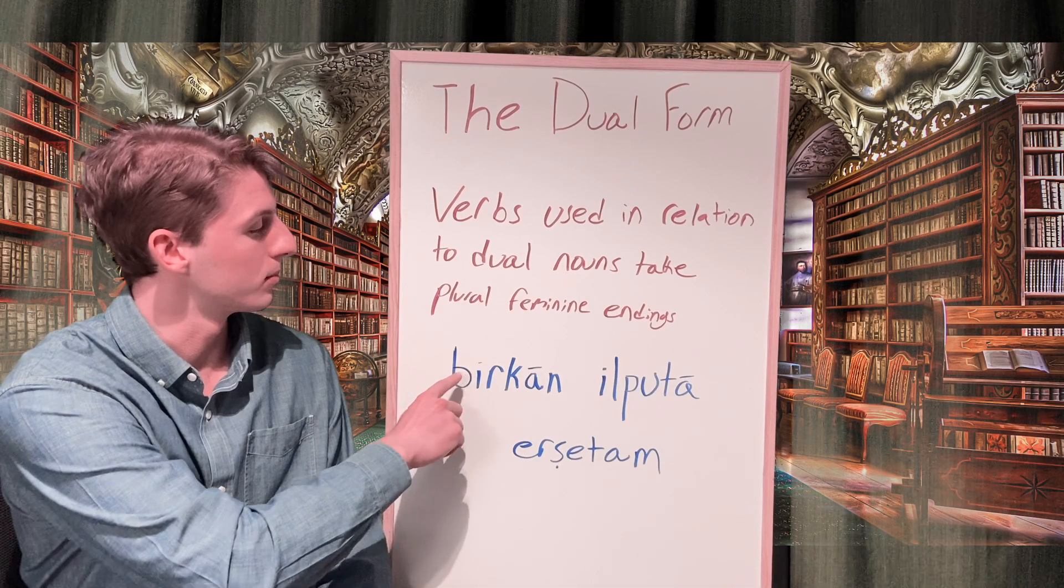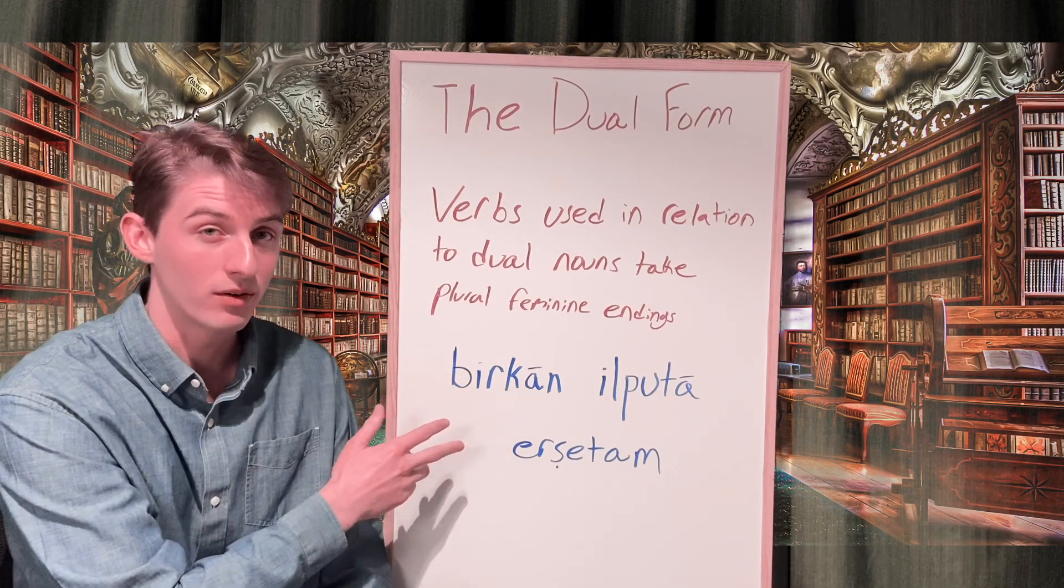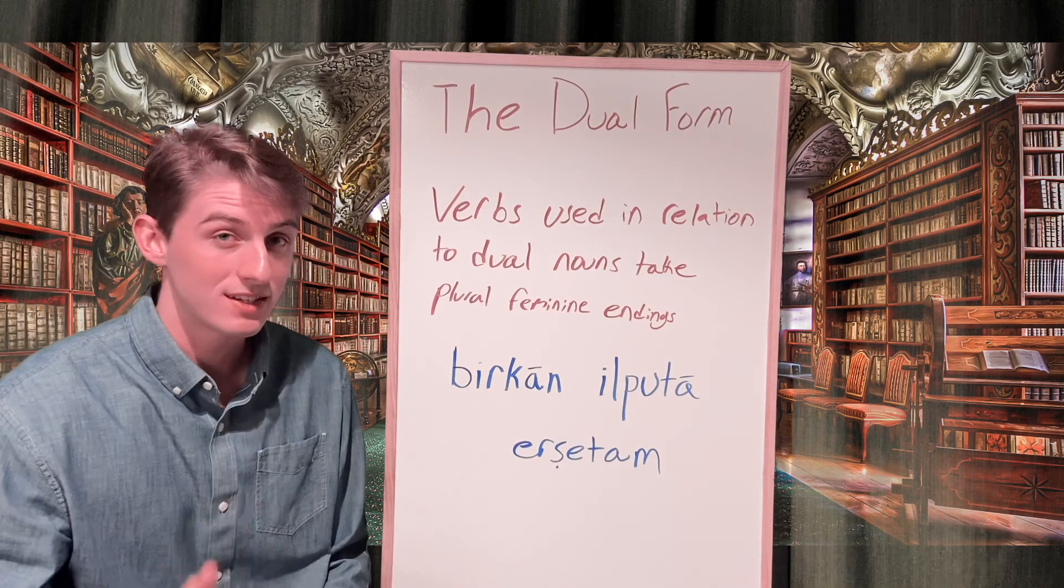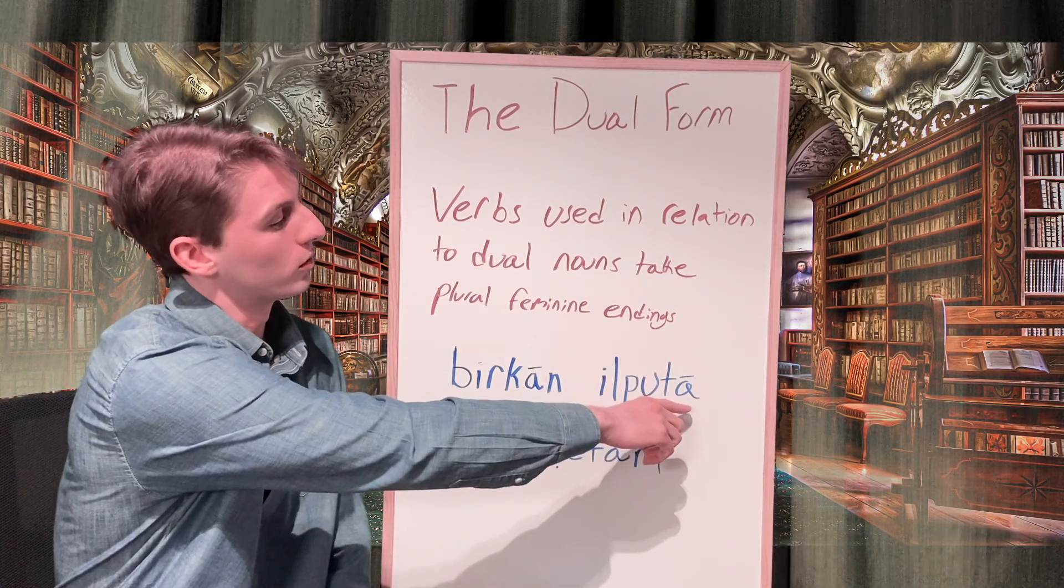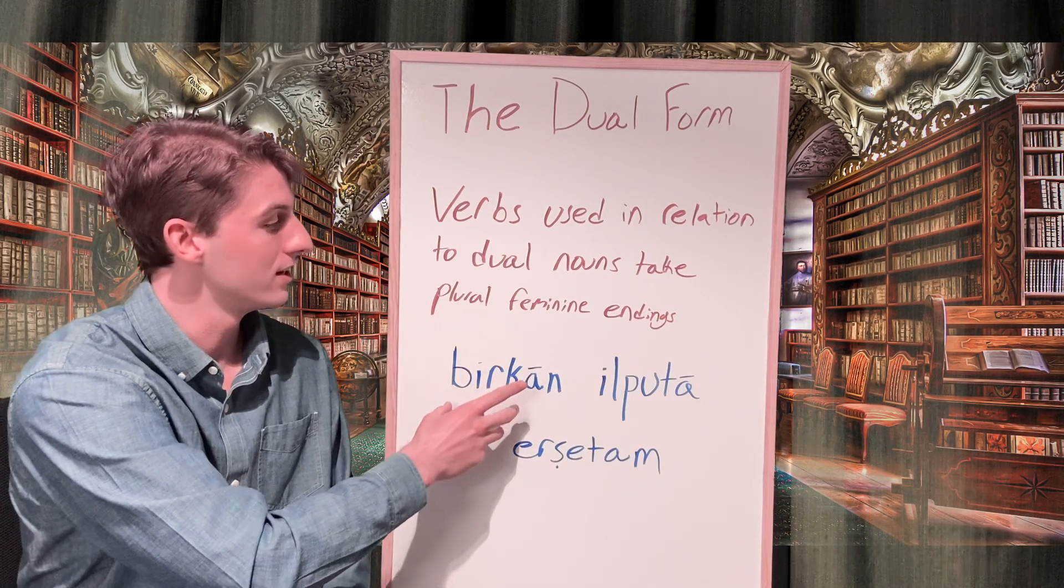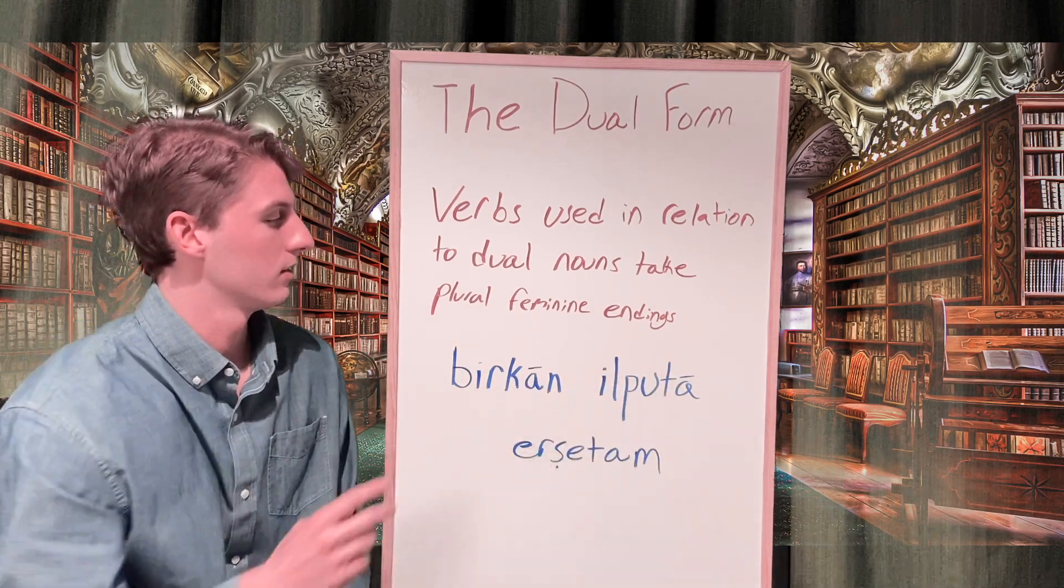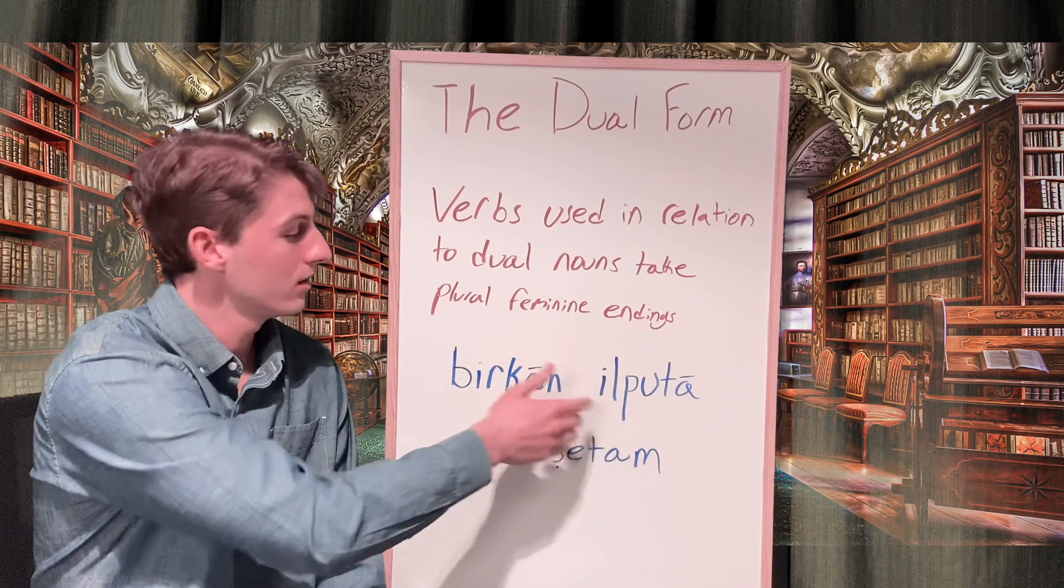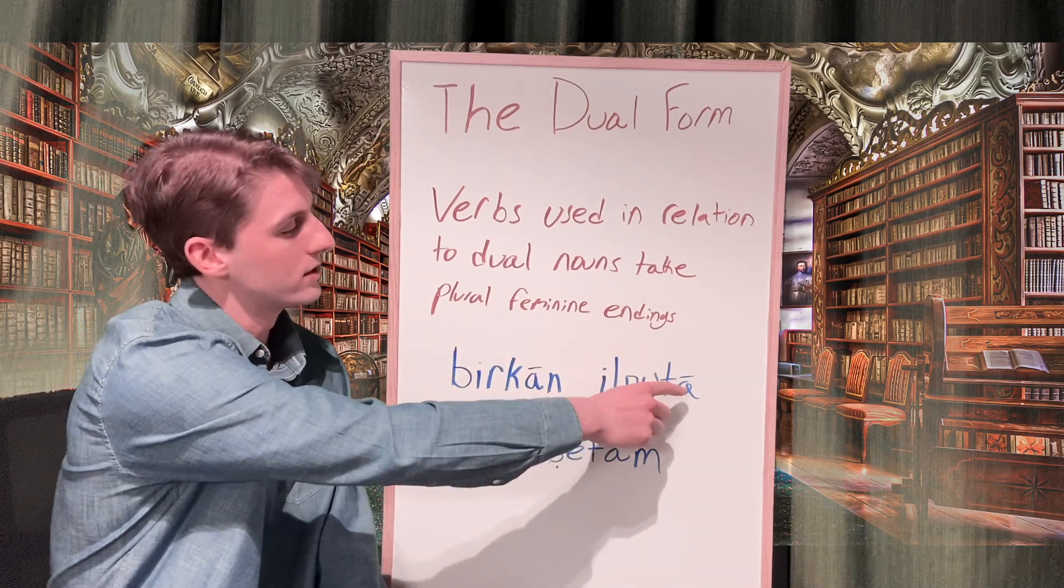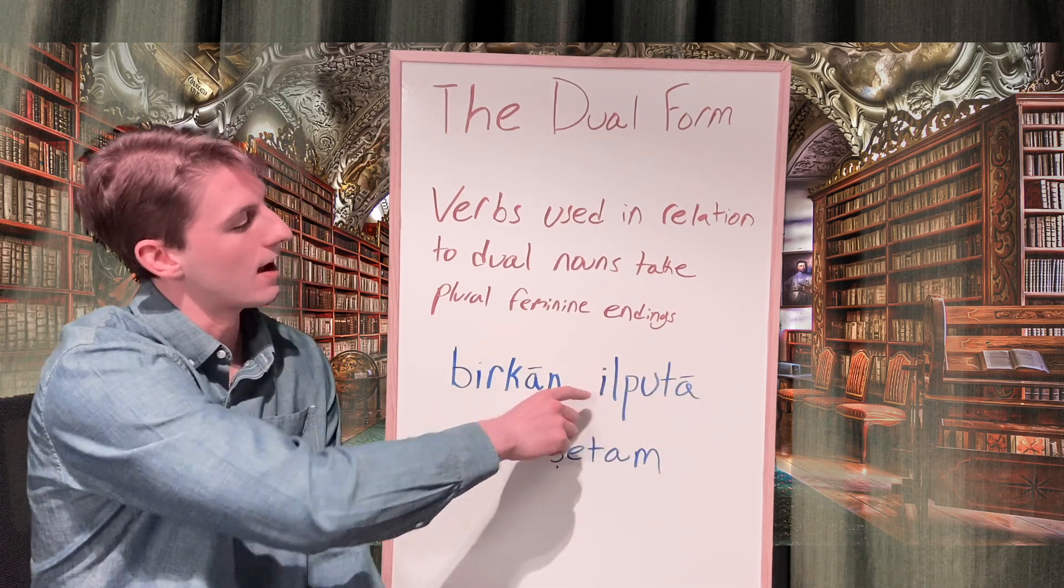Here I have an example using berkan, which is a masculine noun meaning two knees, ilputa, which means touched in the feminine plural, and ersetam, which means ground. So this means the two knees touched the ground. As you can see here, the noun berkan is going to be in agreement with this verb because it's using the feminine plural based off this long A and this T.